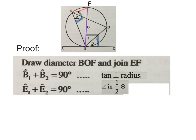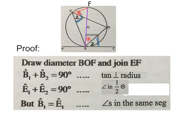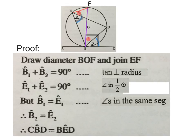Then you'll write E1 plus E2 equals 90 degrees, angles in a half circle. There is the diameter, so those two angles together will be 90 degrees. Then we write B1 is equal to E1, angles in the same segment. Therefore B2 is equal to E2. So the two blue angles are now equal. Then I write my final statement: angle CBD is equal to angle BED.